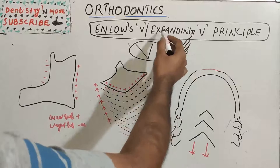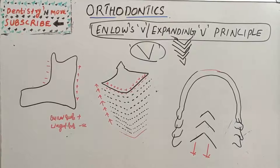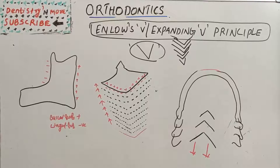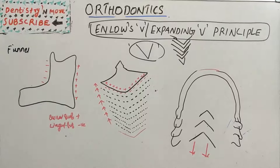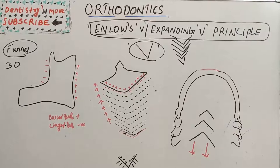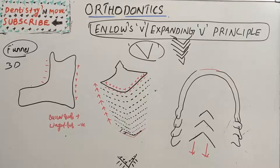Enlow says the expansion happens in the form of a V — that is, the expanding V. It starts narrow and goes expanding. The craniofacial bones or their parts have a V-shaped configuration, or we can say funnel-shaped in three dimensions. Enlow points out that the bones grew by addition on the inner side of the V and removal of bone, or resorption, from the outer side.